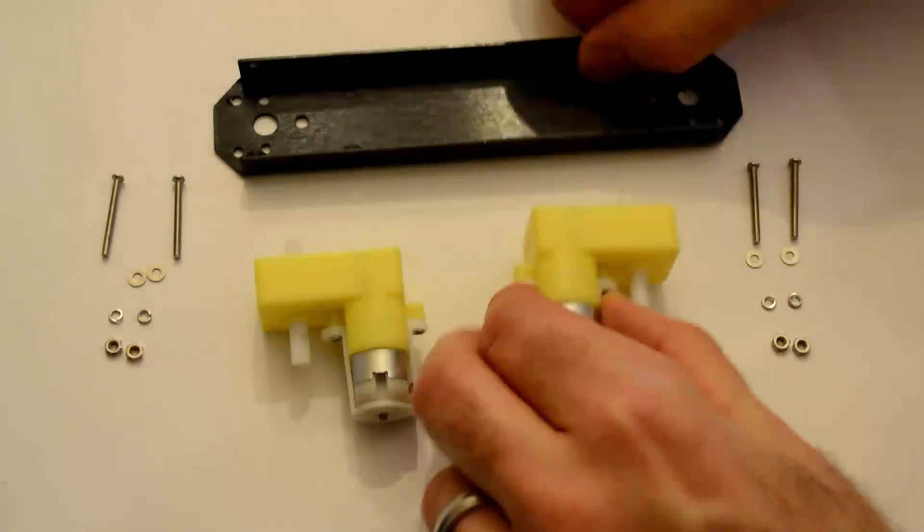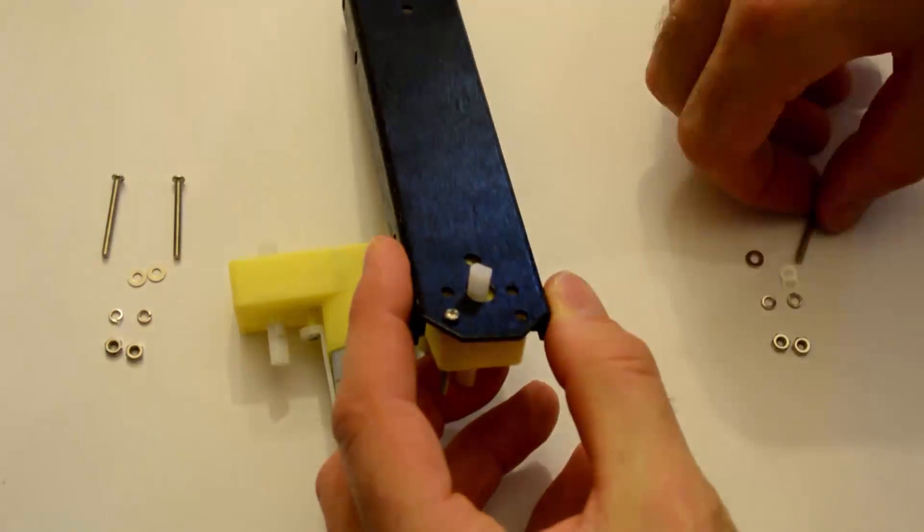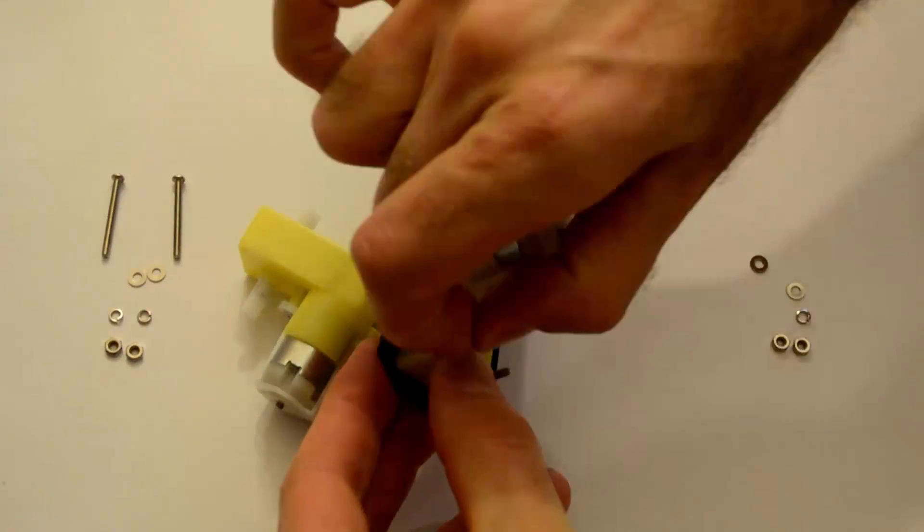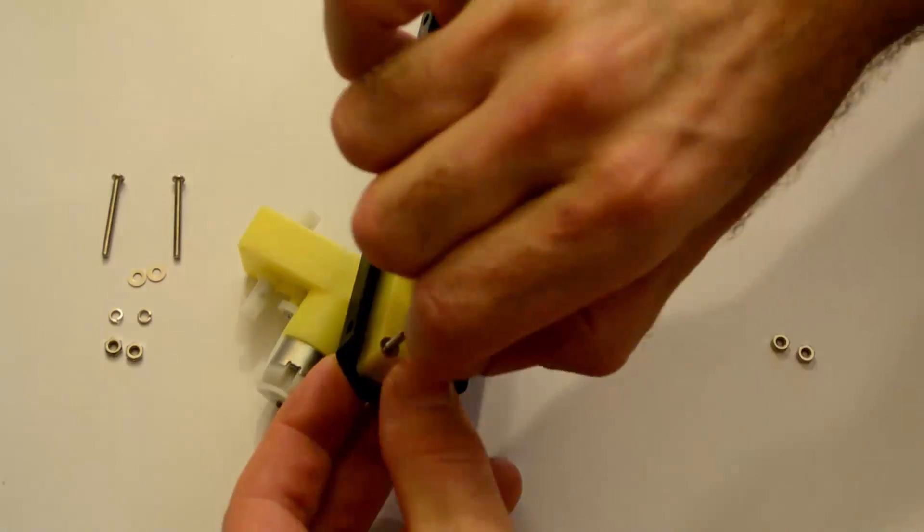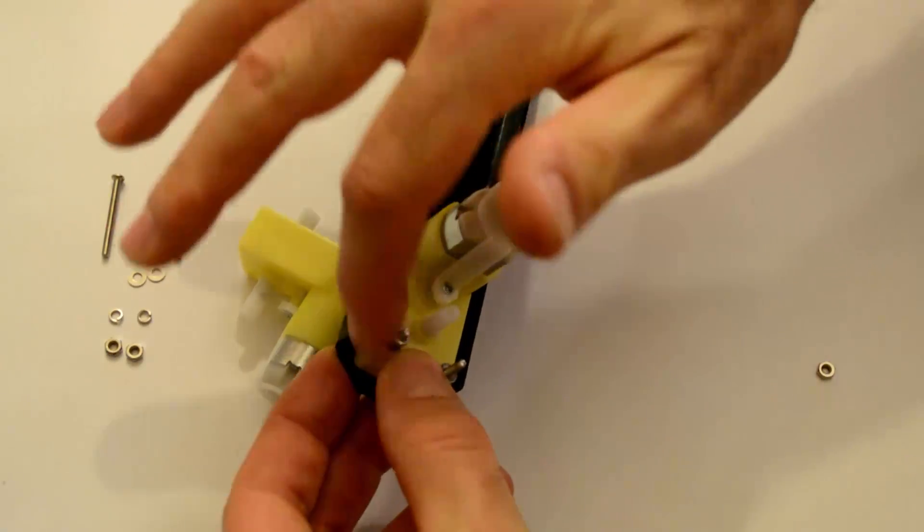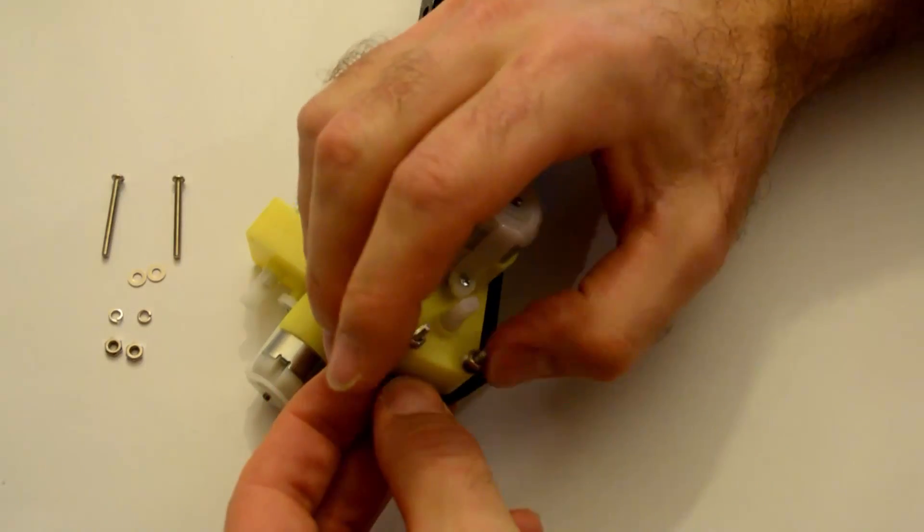The first thing to assemble is the motor assembly. It's a pretty straightforward process. Just remember, once you have the long screw through the metal base and through the motor, first you just add the flat washer, then the spring washer, and finally the nut.